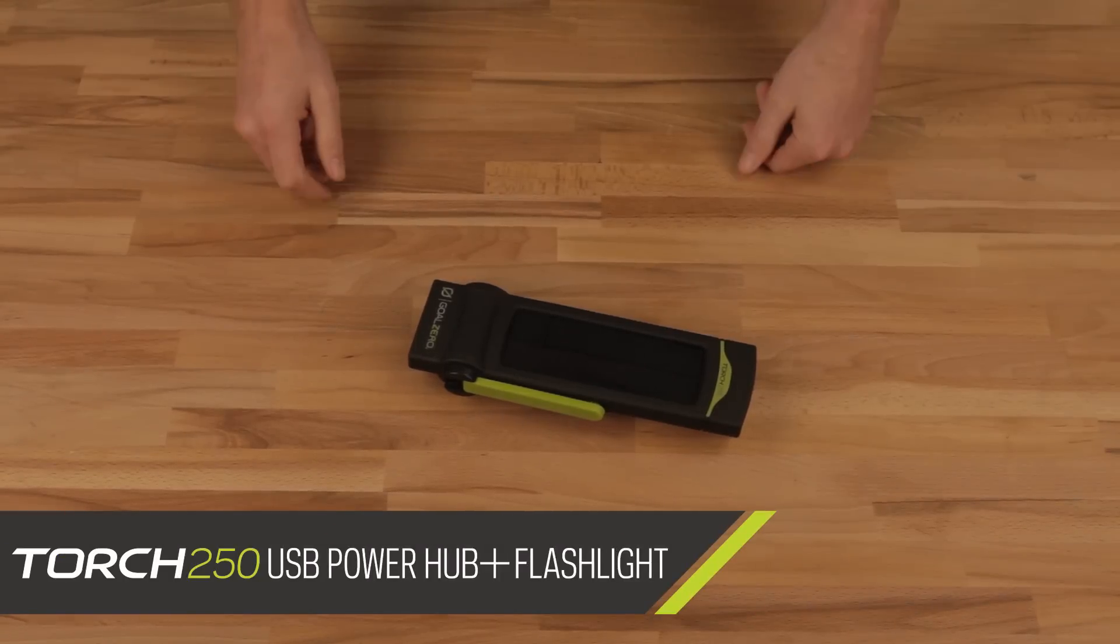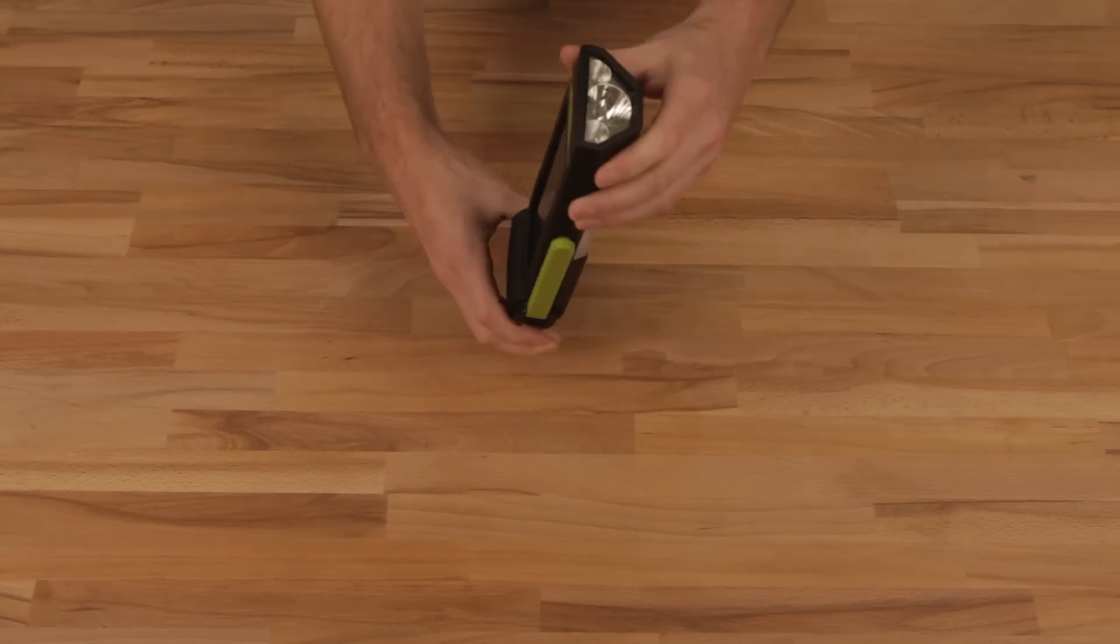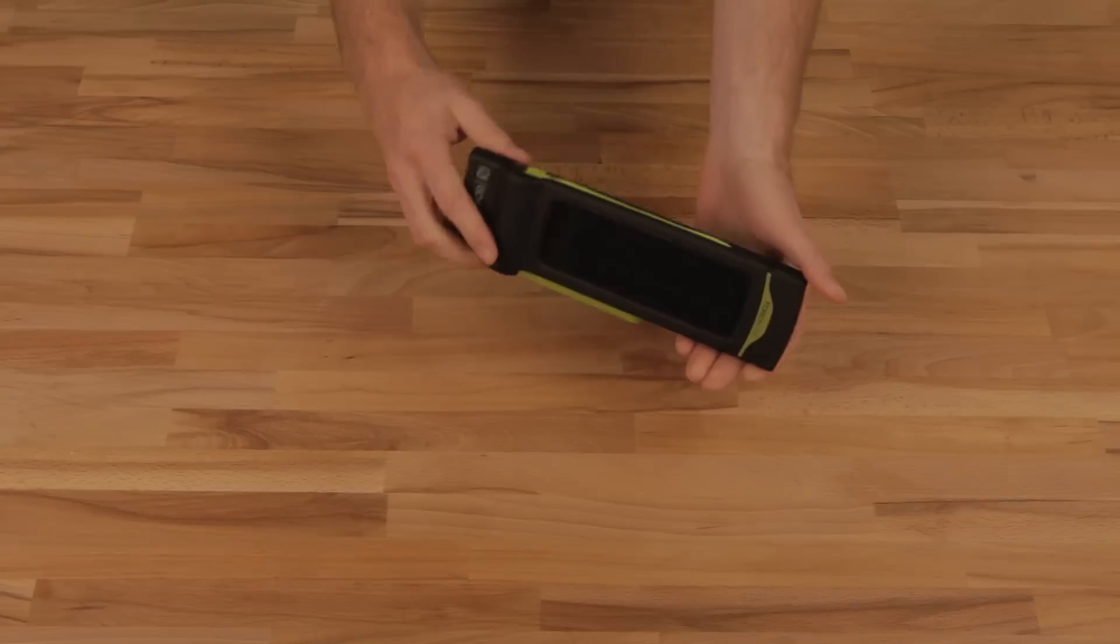Here's everything that comes in the box with the Torch 250. It's basically just the Torch 250. Everything comes attached on this one.